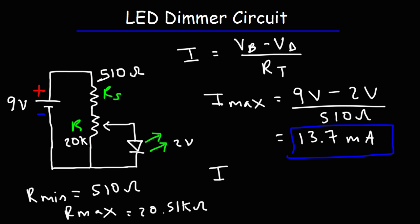Now, let's calculate the minimum current in this circuit. So it's going to be 9 volts minus 2 volts divided by the maximum resistance, 20.51k. So 7 divided by 20.51k, this will automatically give you the answer in milliamps. So it's 0.341 milliamps.